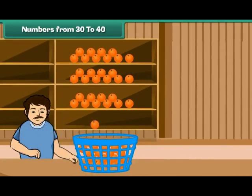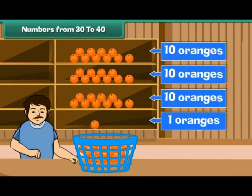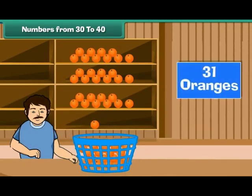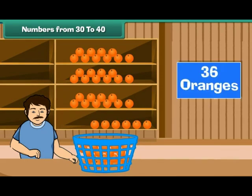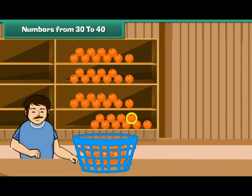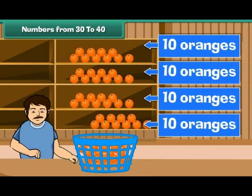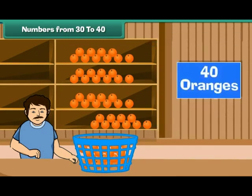Let us now pick up one orange from the basket and arrange it on the fourth shelf. Now we have three tens and a one, which makes 31 oranges. Keep adding one orange at a time to the fourth shelf — and the last orange. Now there are four groups of tens, which make 40.